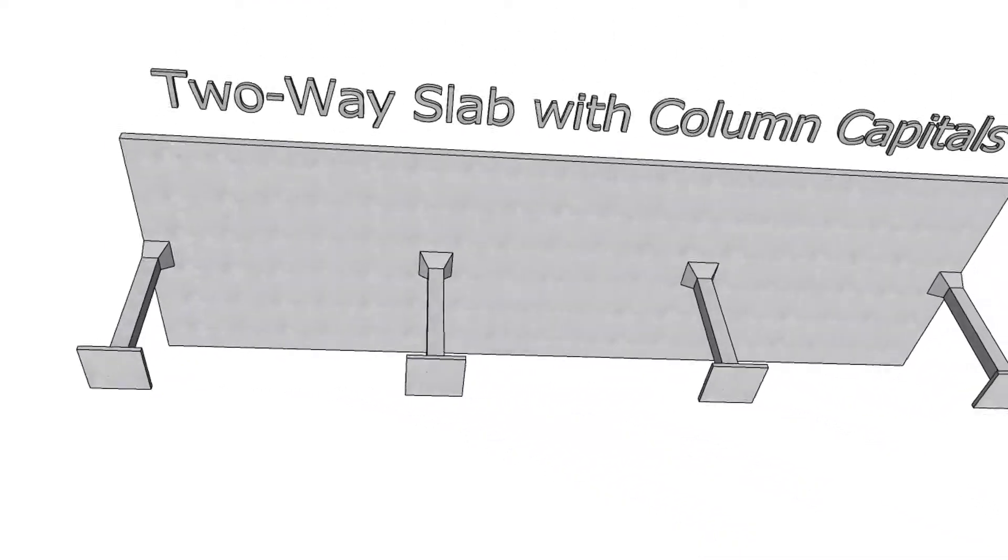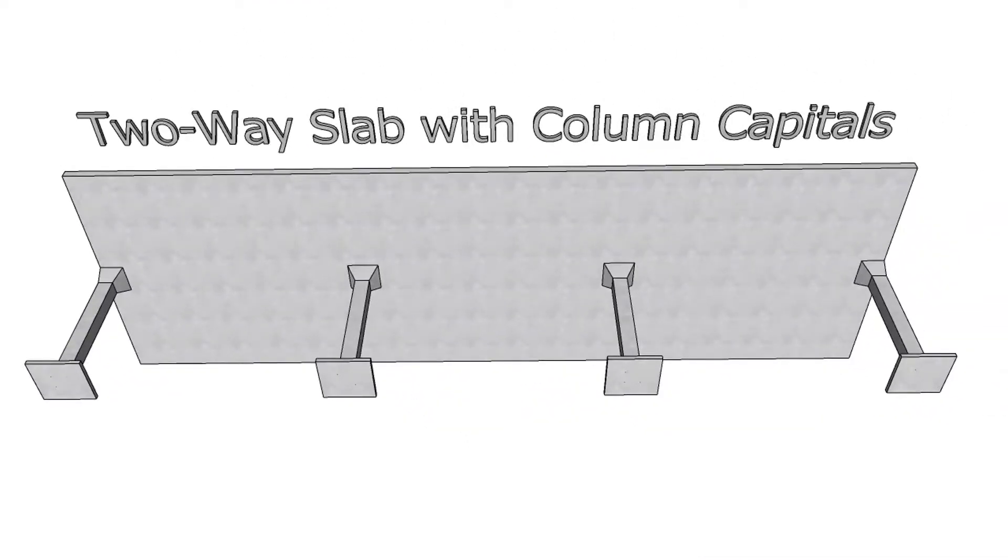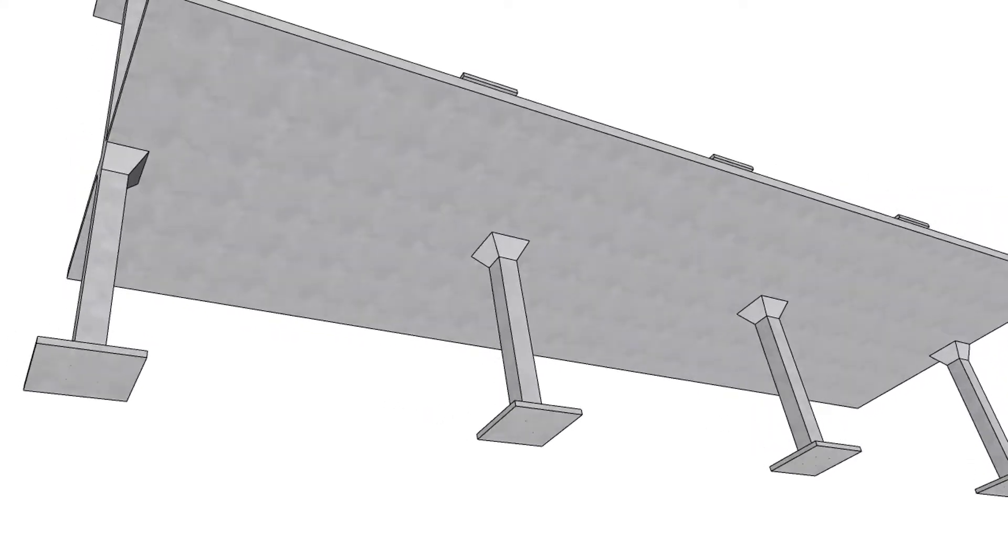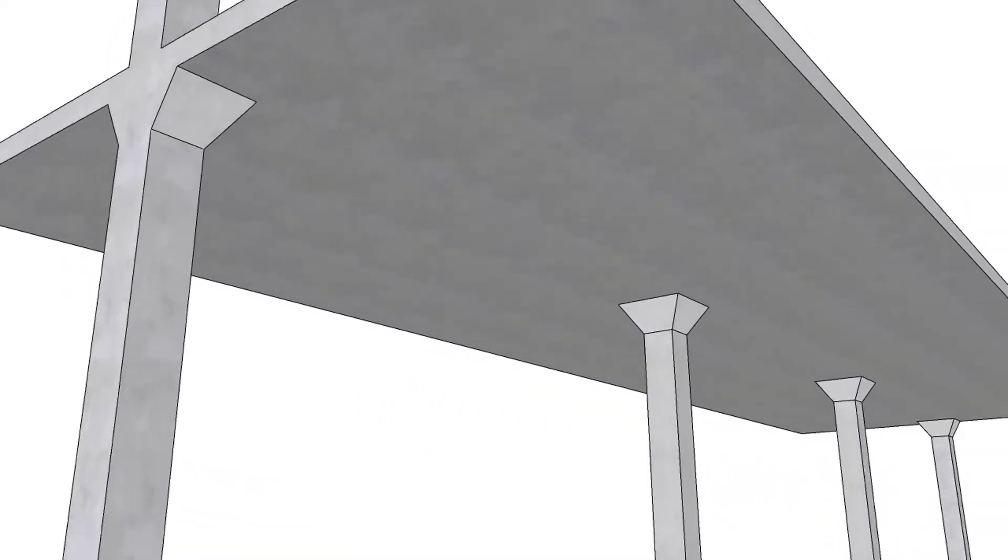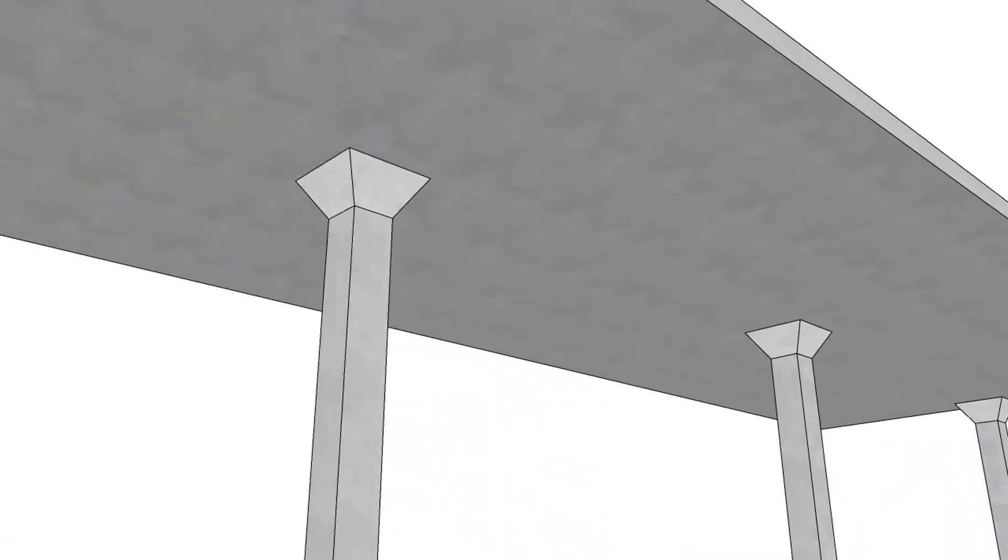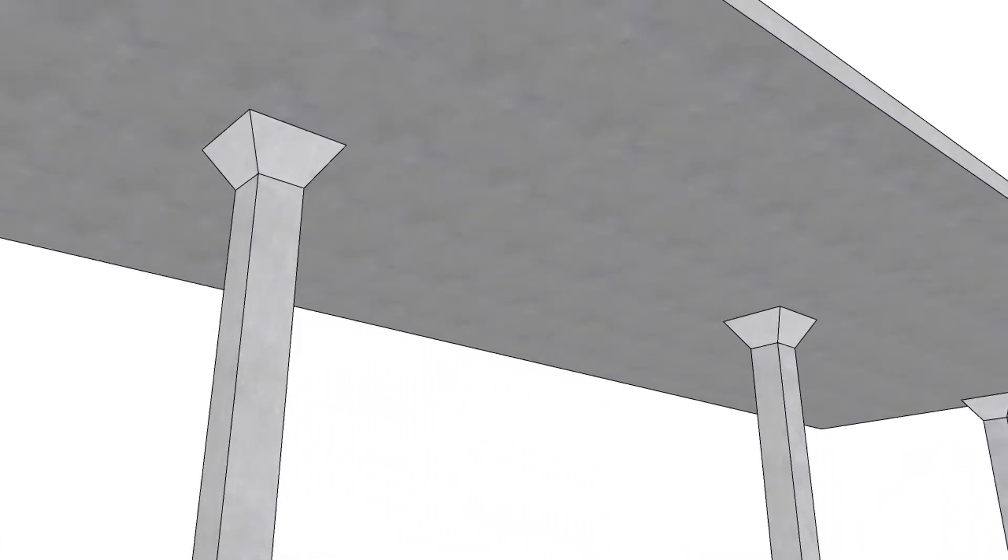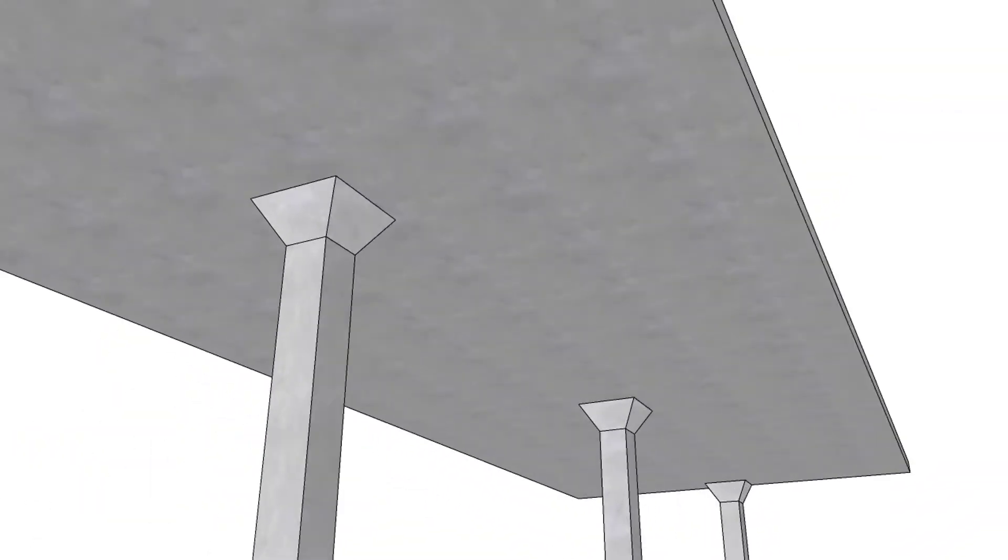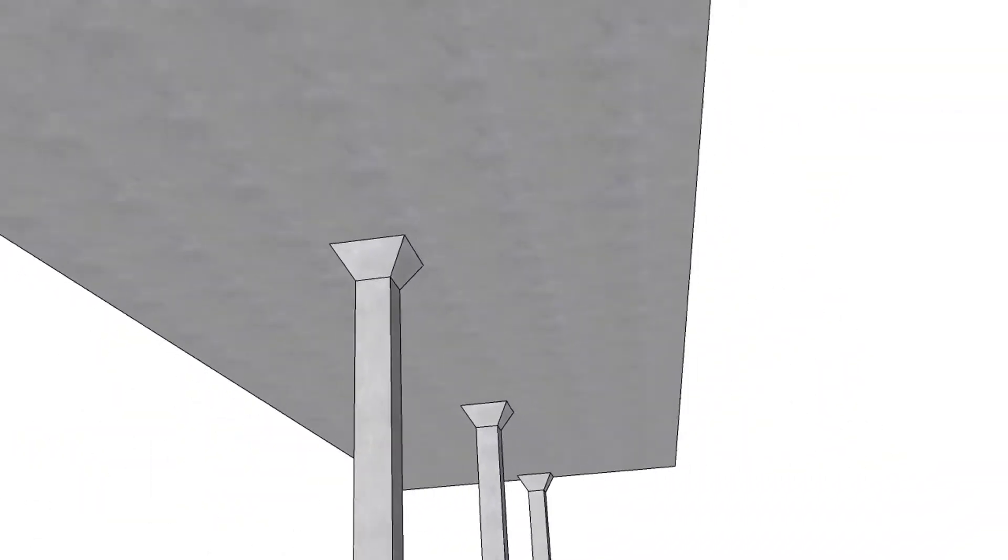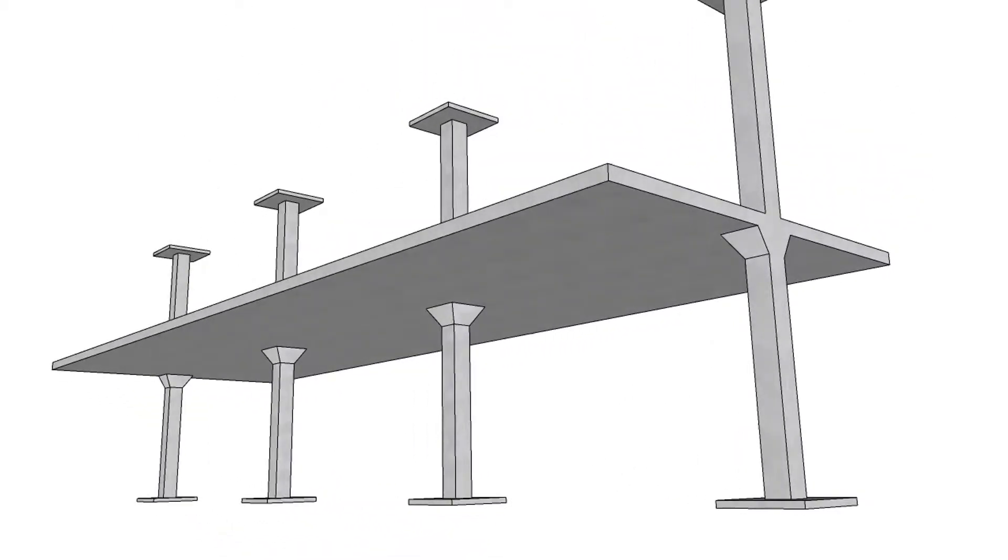In the case where two-way shear or round supports govern the flat plate floor design, column capitals may be utilized to help resolve the issue. A column capital is an enlargement of the top of a concrete column located directly below the slab or drop panel that is cast monolithically with the column. Column capitals are used when computing column stiffness and in two-way or punching shear calculations.